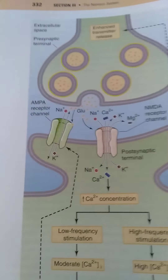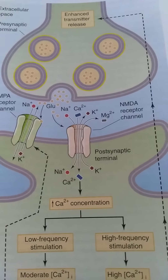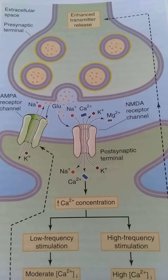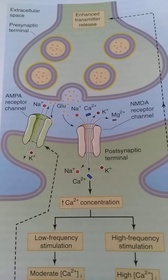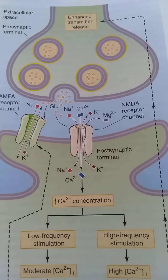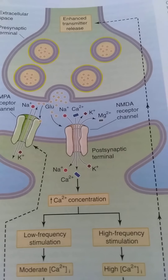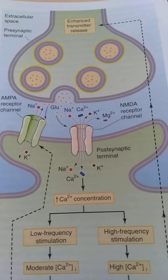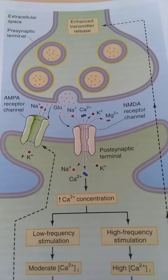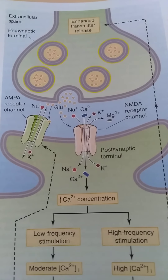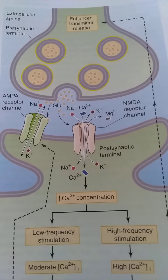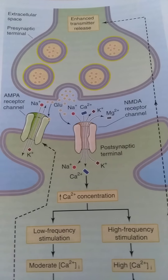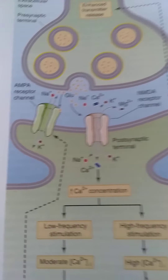Let us see the picture. You can see there is a presynaptic terminal where there are neurotransmitter vesicles. The neurotransmitter here is glutamate. When an excitatory action potential arrives here, there is release of neurotransmitter from the presynaptic terminal.